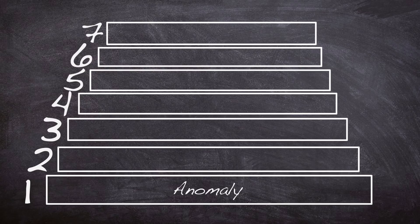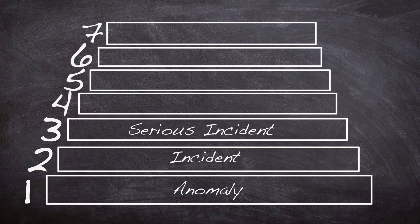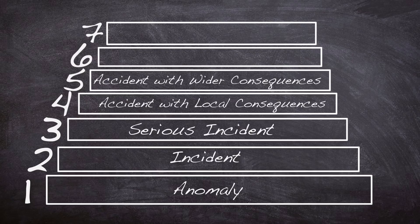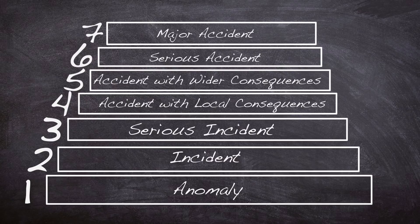Level 1 is Anomaly. Level 2 is Incident. Level 3 is a Serious Incident. Level 4 is an Accident with Local Consequences. Level 5 is an Accident with Wider Consequences. Level 6 is a Serious Accident and Level 7 is a Major Accident.